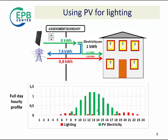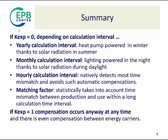This kind of time mismatch is easily identified by an hourly calculation time step. To summarize, if you select k-exported equals 0, depending on the calculation interval: if you select a yearly calculation interval, then the heat pump will be powered in winter thanks to the solar radiation in summer. If you select a monthly calculation interval, the lighting will appear to be powered at night thanks to the solar radiation during daylight. With the hourly calculation interval, you natively detect most time mismatches and avoid such automatic compensation. If you want to guarantee consistency between the different calculation intervals, you have to add matching factors, which statistically take into account time mismatch between production and use within a long calculation time interval.